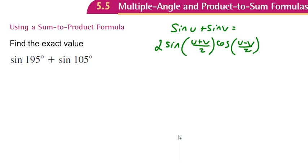Let's do our example number two, and we're going to find the exact value of sine of 195° plus sine of 105°. So since we have a sum, we can write it as a product, and I've written the formula over here, sine of U plus sine of V is this guy right here.